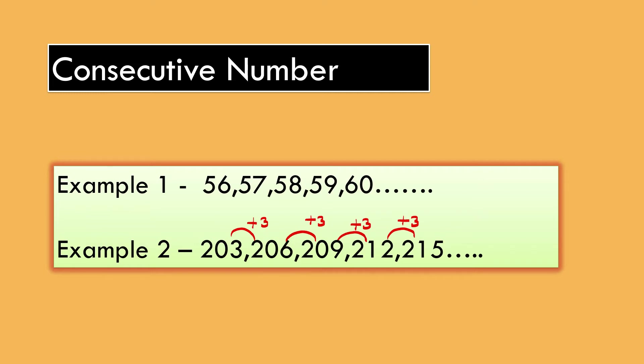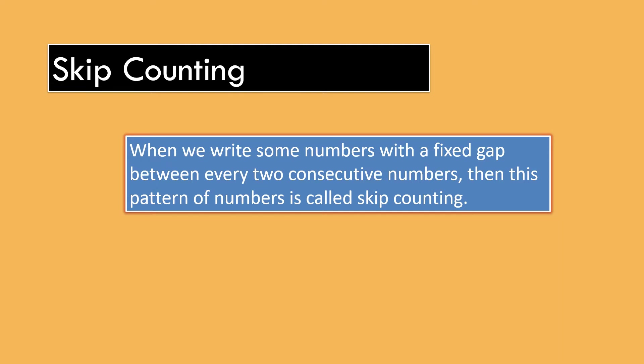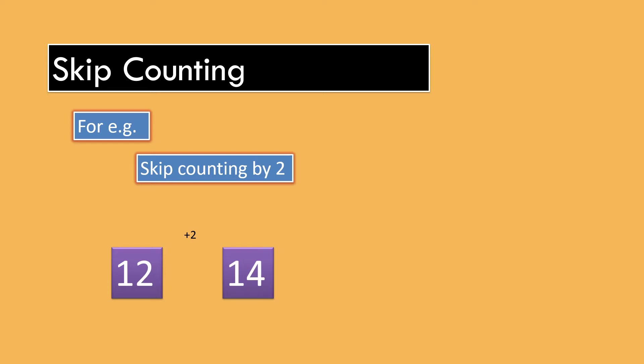Next topic is Skip Counting. When we write some numbers with a fixed gap between every 2 consecutive numbers, then this pattern of numbers is called Skip Counting. For example, Skip Counting by 2. When we add 2 in 12, we get 14, plus 2, we get 16, plus 2, we get 18, plus 2, we get 20.